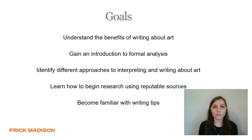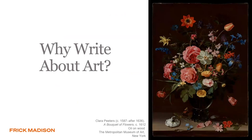The goals for today are to understand the benefits of writing about art, to gain an introduction to formal analysis, to identify different approaches to interpreting and writing about art, to learn how to begin research using reputable sources, and to become familiar with writing tips. Writing about art translates a visual medium into a written one. It helps us communicate ideas and feelings about art, can inform or persuade the reader, and as an interpretive process, allows both the reader and writer to gain a greater understanding of the impact and meaning of art, leading to greater appreciation.